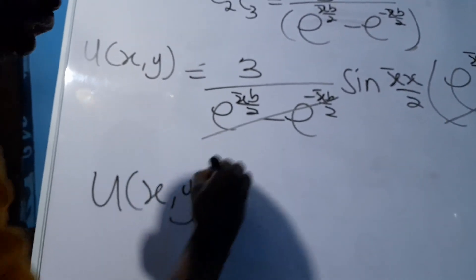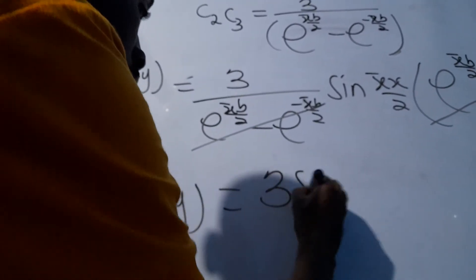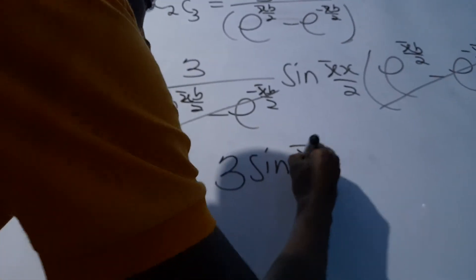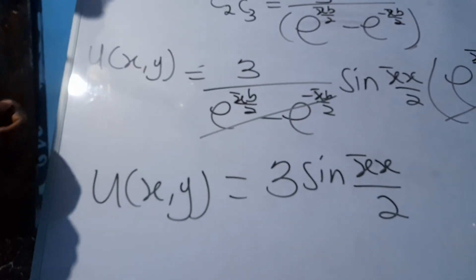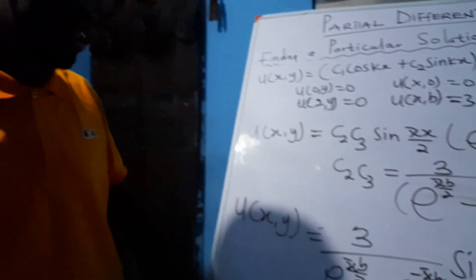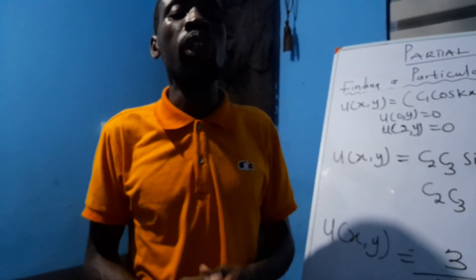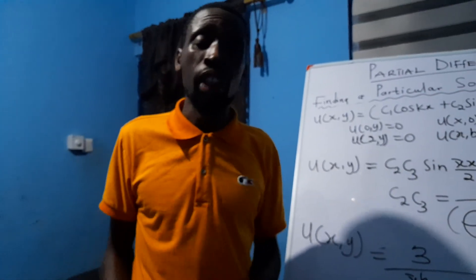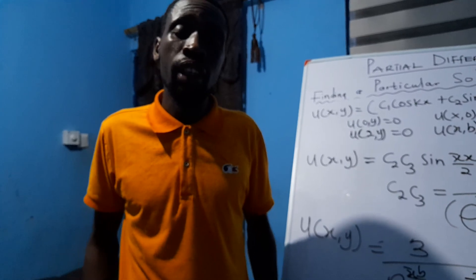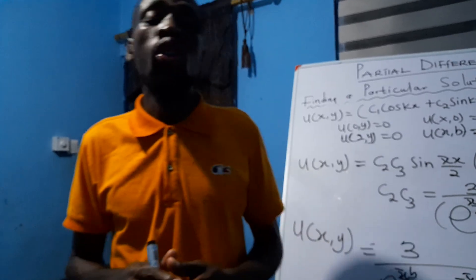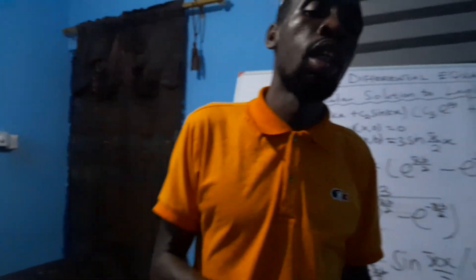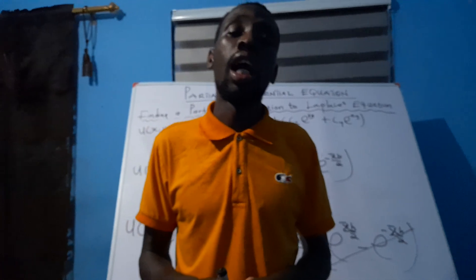So our particular solution is u(x,y) = [3 / (e^(πb/2) - e^(-πb/2))] · sin(πx/2) · [e^(πy/2) - e^(-πy/2)]. This is the particular solution to Laplace's equation given the boundary conditions. I hope you get this — play the video over and I know you will grasp the concept. Please remember to subscribe to the YouTube channel, click the notification bell, and until we meet again on partial differential equations, good luck.